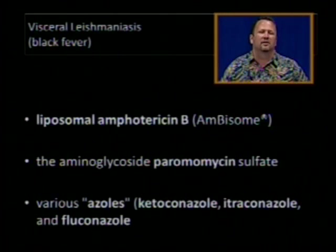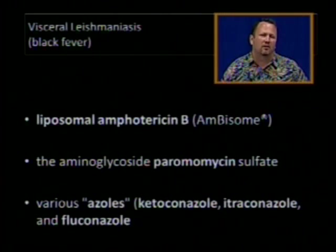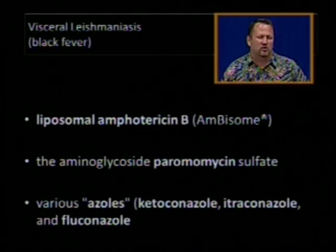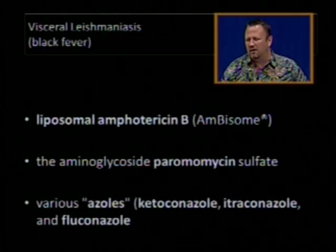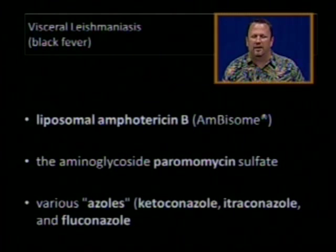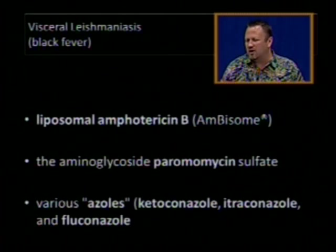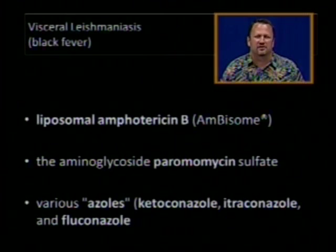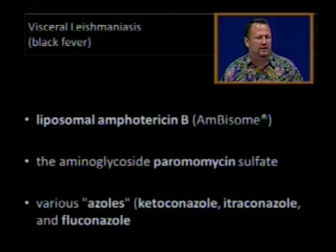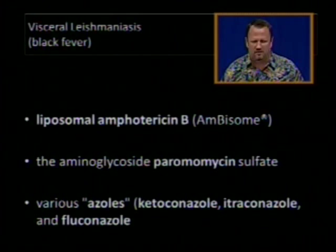Paromomycin is an aminoglycoside that can be used for the treatment of visceral leishmaniasis. The various azoles — ketoconazole, itraconazole, and fluconazole — are also options that can be used in the treatment of visceral leishmaniasis.